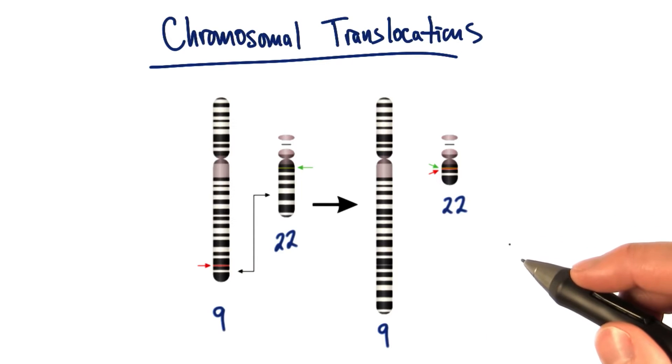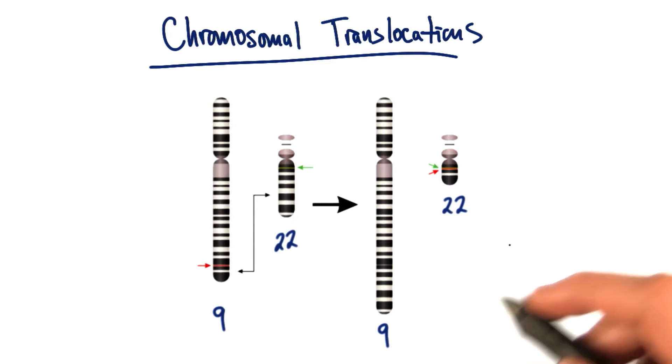Not only do chromosomal translocations happen, and not only can you swap genetic information, actual genes, in frame to get fusion proteins, but there are certain kinds of translocations that are known to happen on a regular basis.